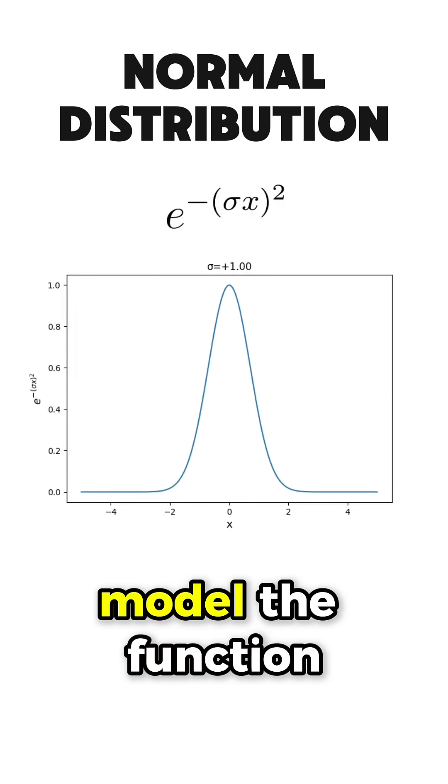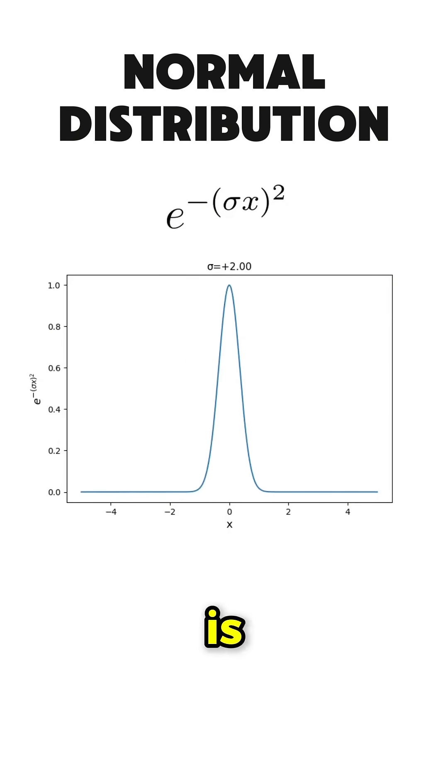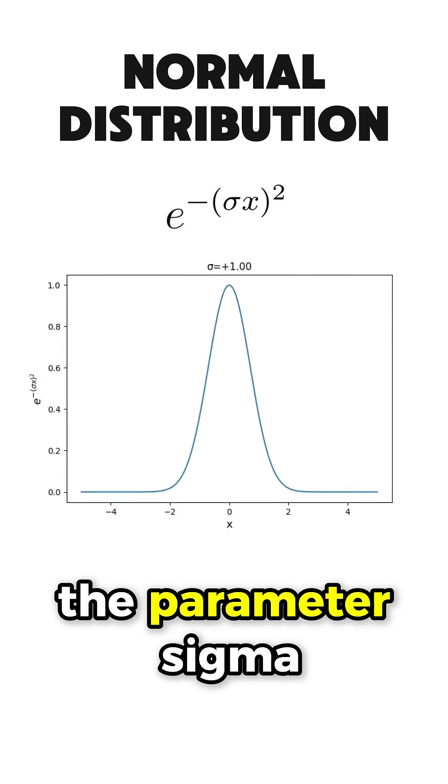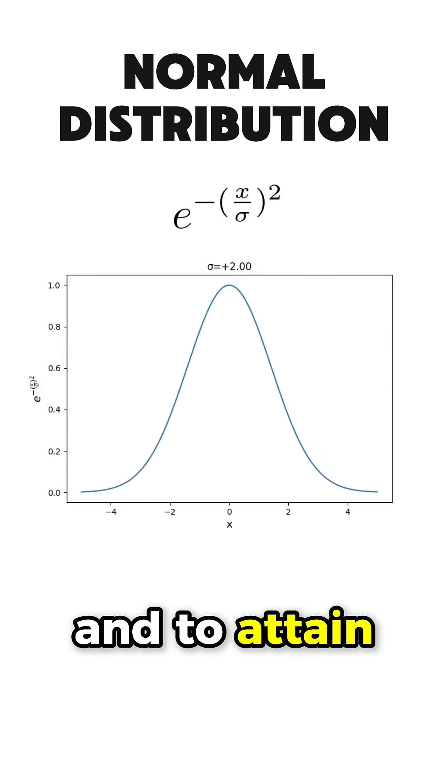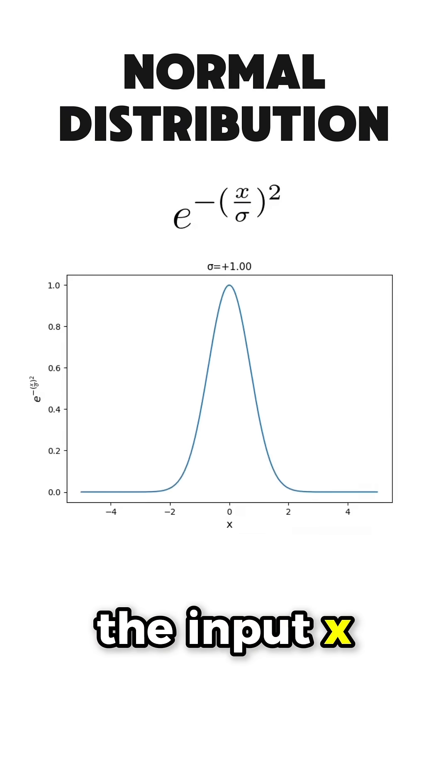However, if we model the function in this way, we can see that the spread of the bell is inversely proportional to the parameter sigma. So instead, we like the two to be directly proportional, and to attain that we divide the input x by sigma.